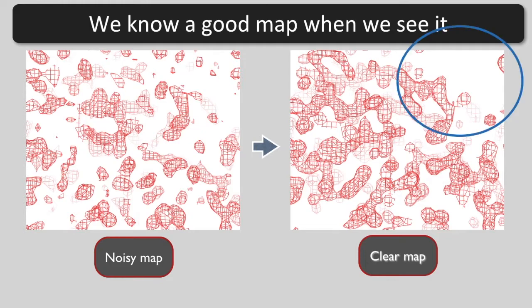A flat solvent region. This region is featureless because the water molecules in the crystal are in different places in each unit cell and we just see the average. Clear density that looks like a protein.